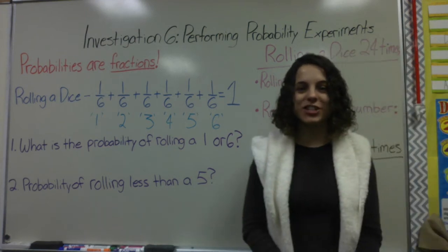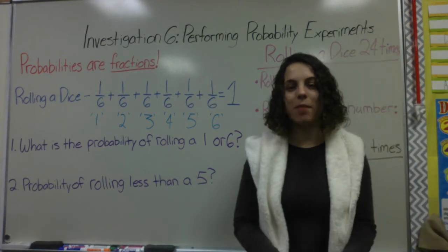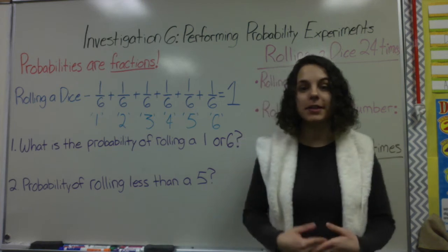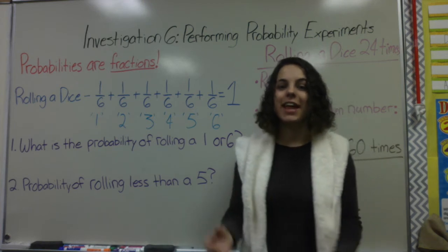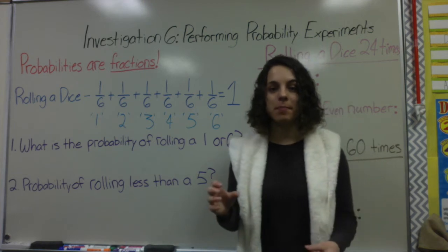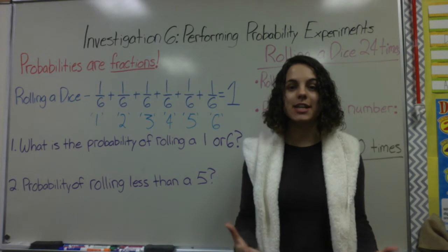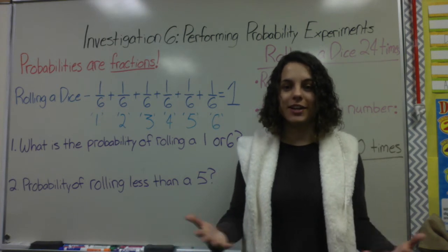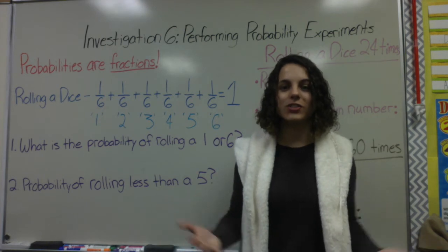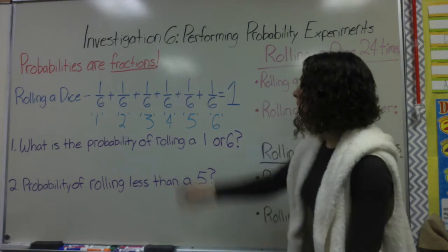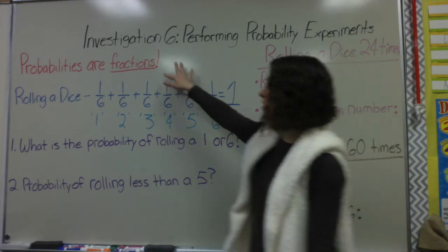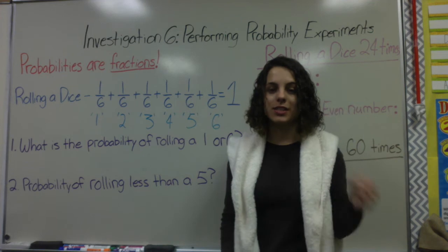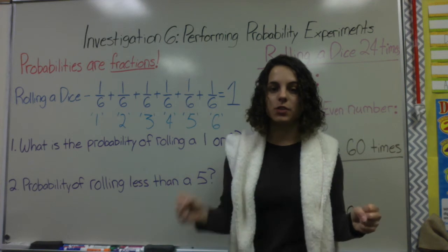Hello, welcome to Investigation 6. This is about performing probability experiments. We learned what probability is in a previous lesson and that we write probability as a fraction — it is the chance or the likelihood of an event occurring or something happening. Probabilities are always written as a fraction because it's between the numbers 0 and 1.